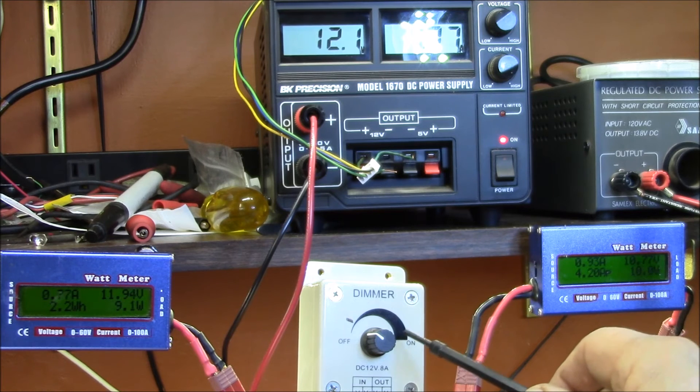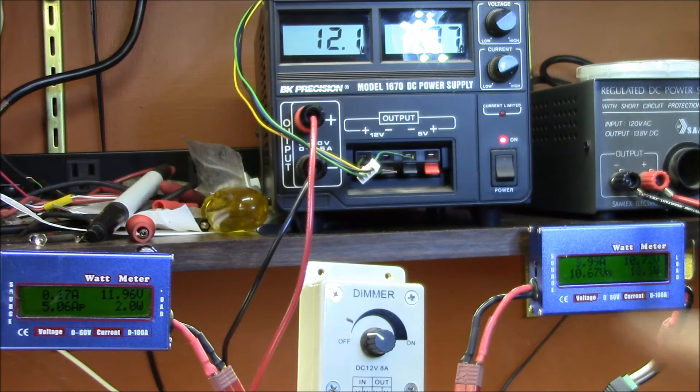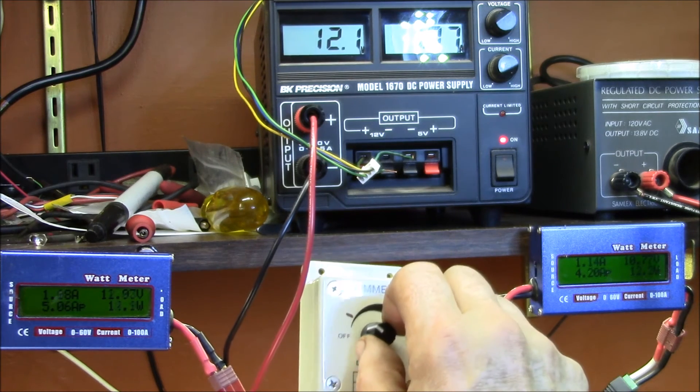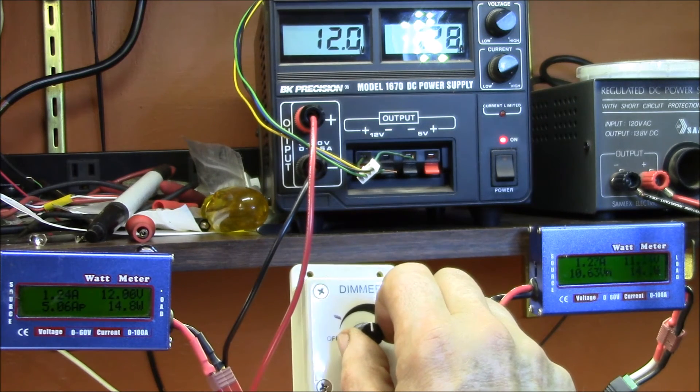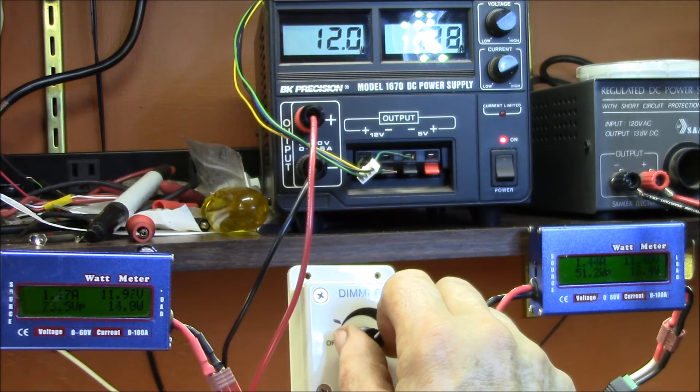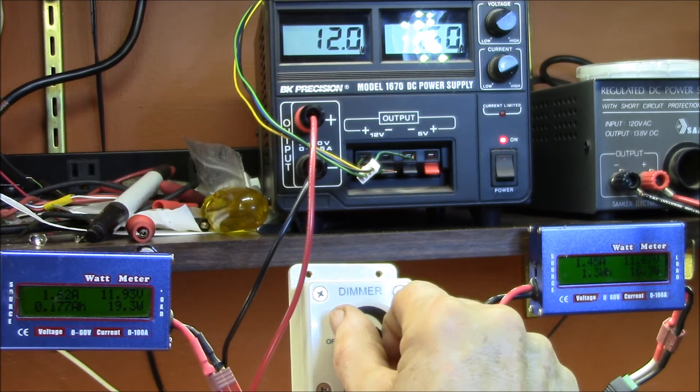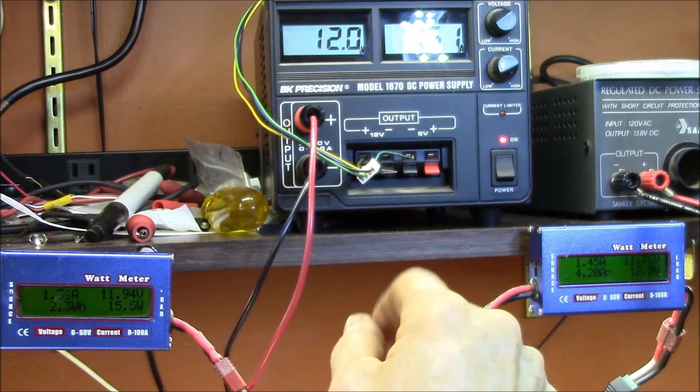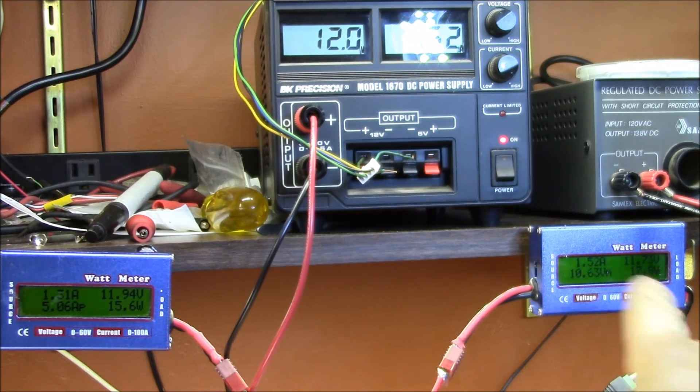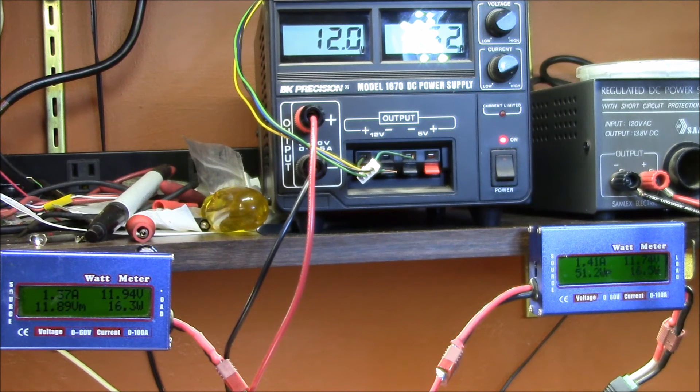And then another thing I notice with this dimmer is it's affected by the load. With loads under about one amp, it's hard to get full brightness on the dimmer. You can turn it all the way up. Now you can watch here, I've got about 2 amps of load. And I can go up to pretty close to full brightness. You can see there is some loss here. I've got 11.94 going in and 11.74.